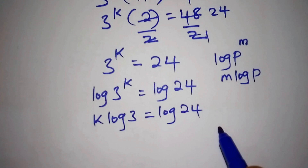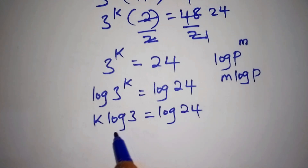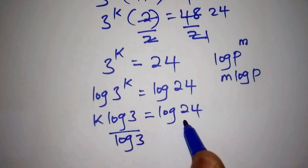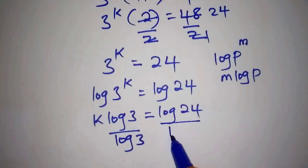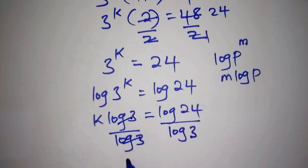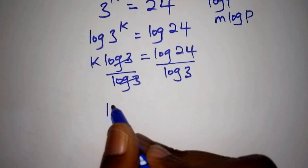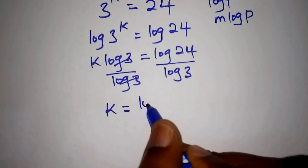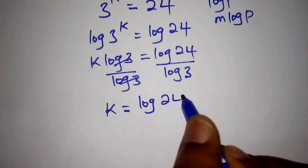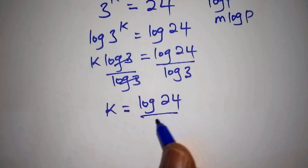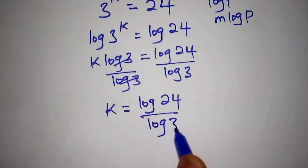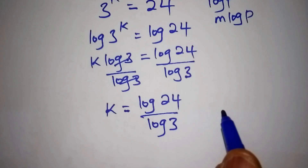To isolate k, we divide both sides by log of 3, so log 3 and log 3 cancel. Our value for k is equal to log of 24 all over log of 3. Most people make the mistake of leaving it at this point.